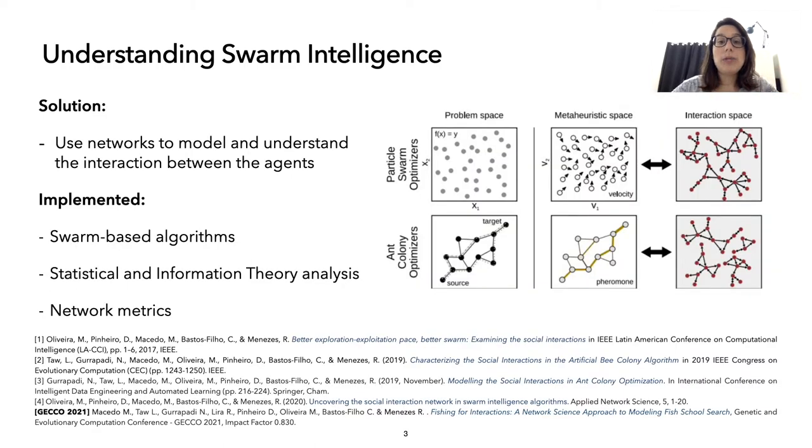So our goal has been to study the social interactions between the agents of the swarm that can provide diversity and convergence of the algorithms. Our goal is to understand what is happening in this meso level that can be providing certain characteristics for the swarm or for the algorithm.